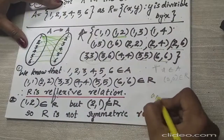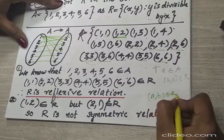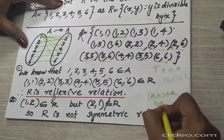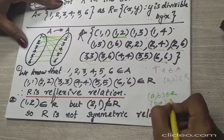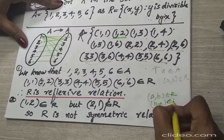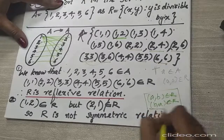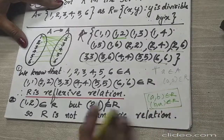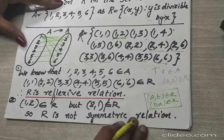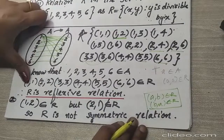We write: (1,2) belongs to the relation, but (2,1) does not belong to the relation. For symmetry, if (A,B) belongs to the relation, then (B,A) must also belong to the relation. Since that condition is not satisfied here, the relation is not symmetric.